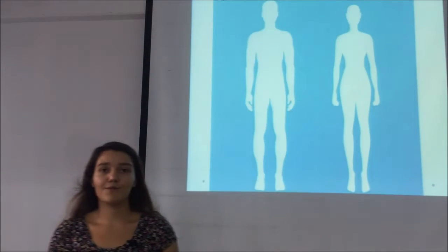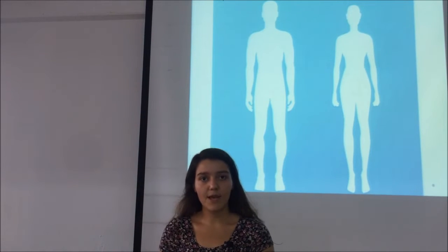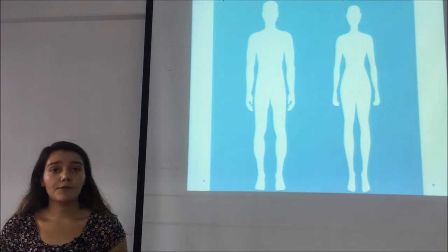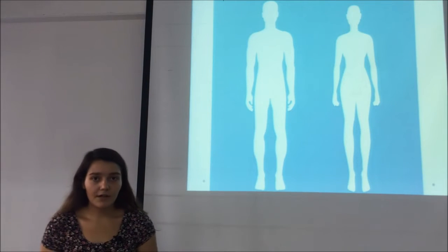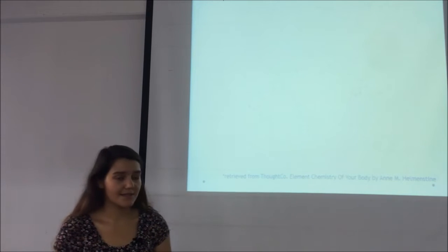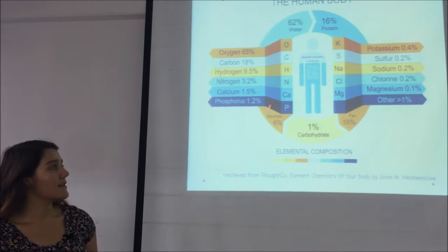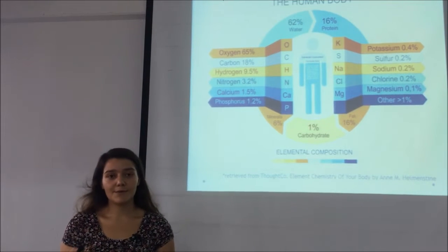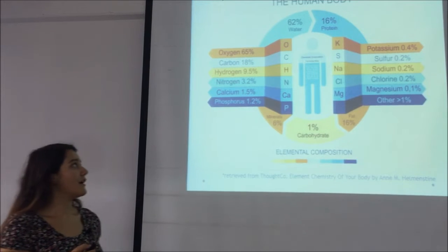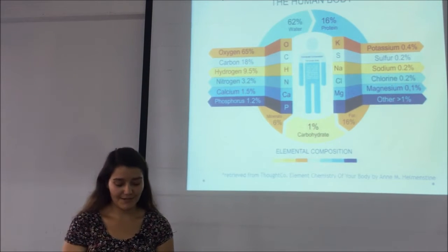Let me start with the ingredients of human body. Our bodies contain lots of different elements, but a huge part of them are made up of only a few elements. I want to show you an illustration which I borrowed from an article by Anne Hellmanstein, who is a science author. If you look at the percentages, you can see that almost 99% of our bodies have only six elements, which are oxygen, carbon, hydrogen, nitrogen, calcium and phosphorus.